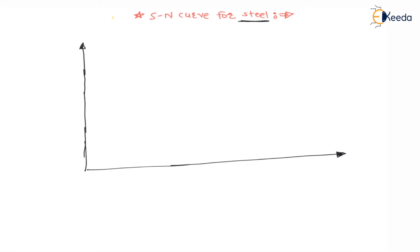On the y-axis it is log₁₀(SF) and on the x-axis it is log₁₀(number of revolutions). Whenever revolutions are zero, it means static load. For zero revolutions it is static load and the static strength corresponds to the ultimate point. Therefore, the point here is log₁₀(SUT) — the ultimate strength.